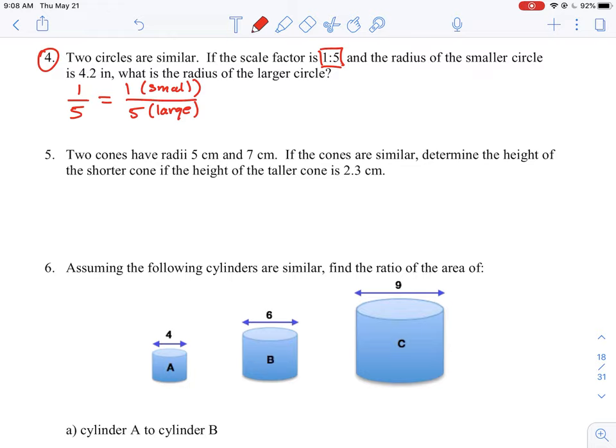The radius of the smaller circle is 4.2, so what would be the radius of the larger object? We can set up a proportion here. We know our ratio is 1 to 5, and the top number equals the measurement for the small object. So the small object is 4.2.